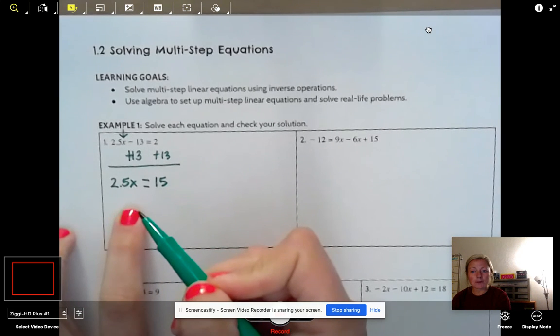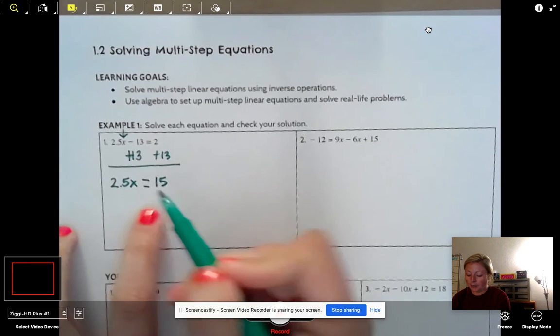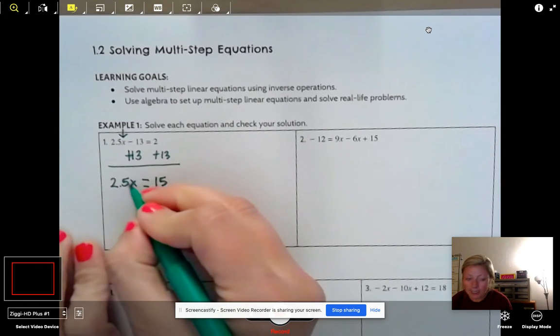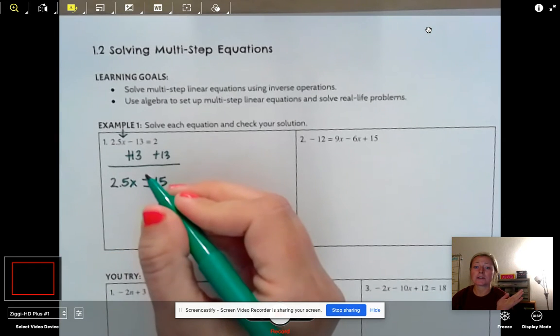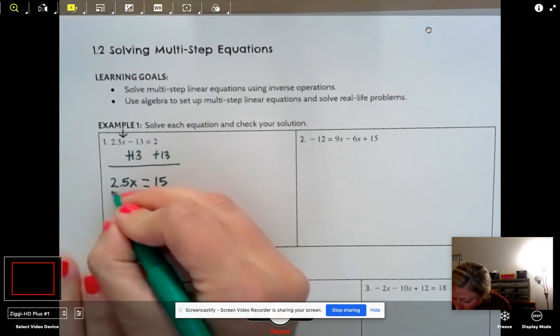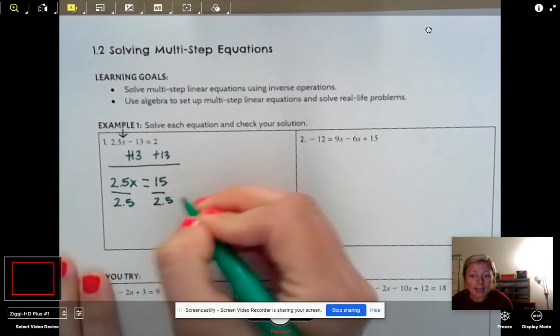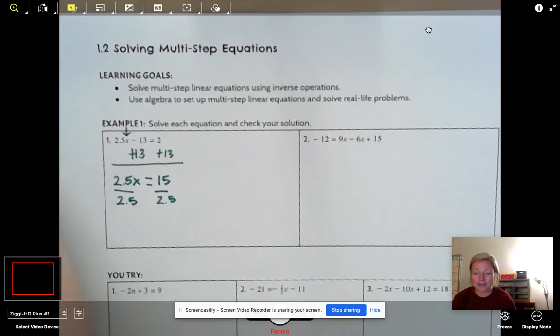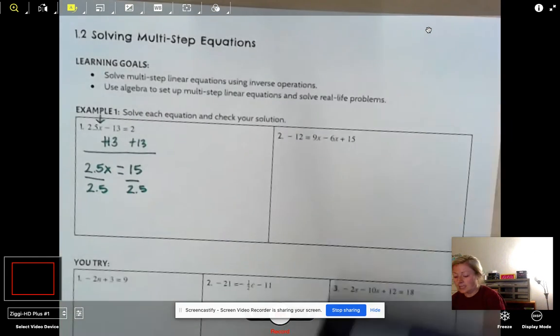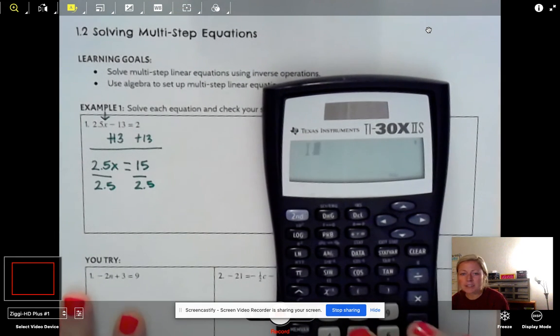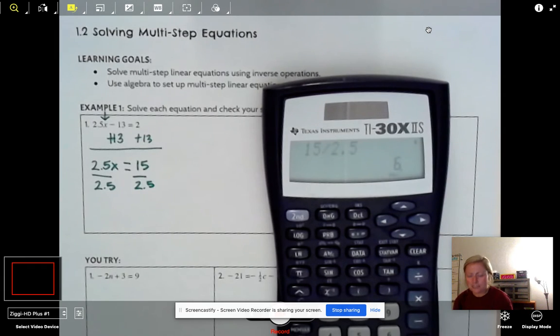And now we have a problem that we had the other day in notes. It's just a one-stepper. I want to get x by itself. How do I get x by itself here? Well, right now I'm multiplying by 2.5. So we want to divide by 2.5. Again, whatever I do to one side, we have to do to the other because we have to keep things equal. So 15 divided by 2.5 kids is 6. We got it.